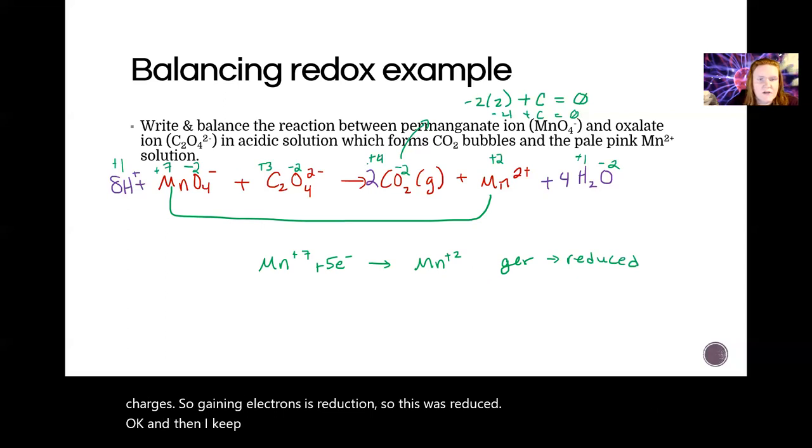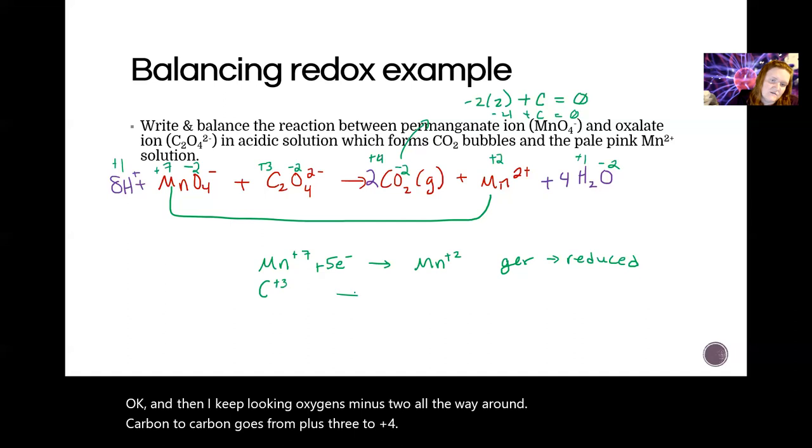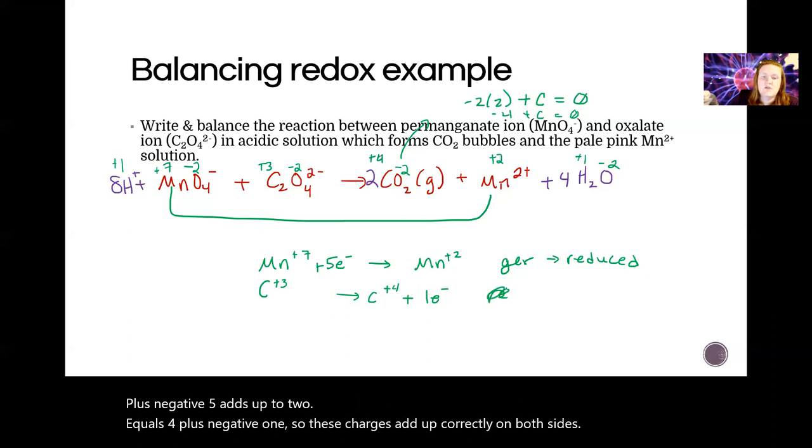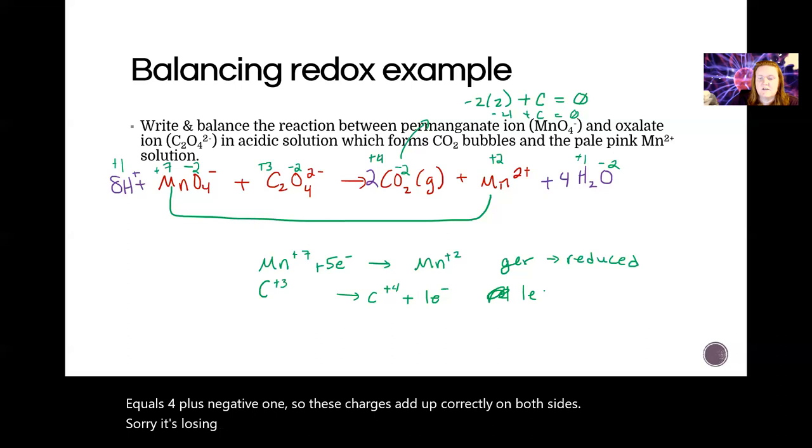And then I keep looking: oxygens minus two all the way around. Carbon, carbon, carbon goes from plus three to plus four. To do that, to go more positive, I have to get rid of an electron. So you'll notice seven plus negative five adds up to two. Three equals four plus negative one. So these charges add up correctly on both sides. That's a reduction—oh, sorry, it's losing electrons. So it's oxidation. So it is oxidized. Good. So we have one thing reduced, one thing oxidized, as we would expect. However, I noticed that carbon only produced one electron.